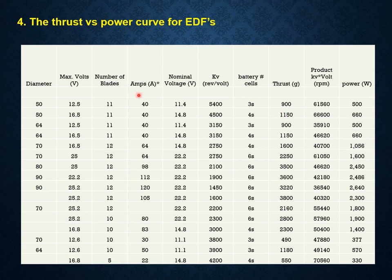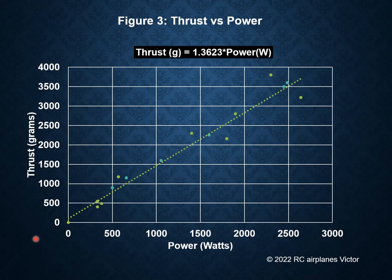Taking data from different manufacturers, including EDFs with different number of rotor blades, kV, diameter, voltage, and power, I plotted a graph of the claimed thrust versus the indicated power. This graph shows the relationship between the thrust generated by an EDF and the power that it needs to develop such thrust. On the vertical axis we have thrust in grams and on the horizontal axis we have the power in watts. I found that all these data fit an almost linear relationship, as the graph shows here, which is very interesting because we used data from different sources.